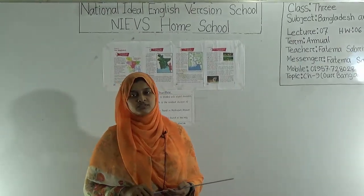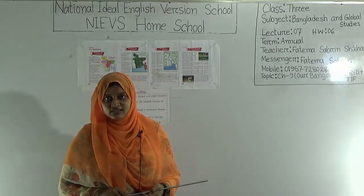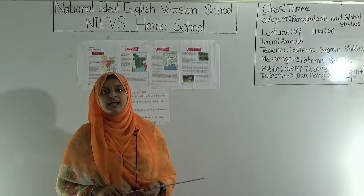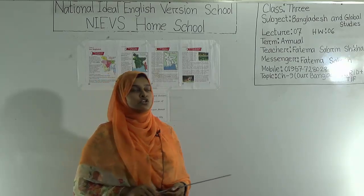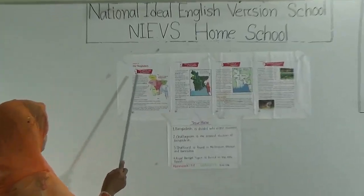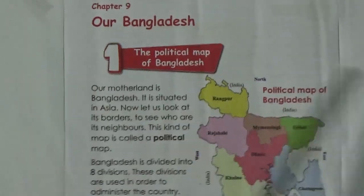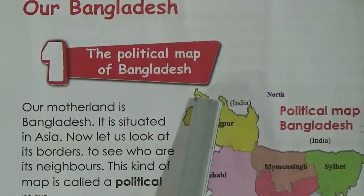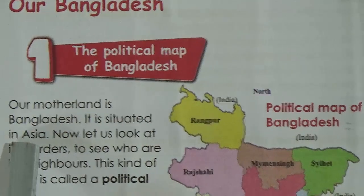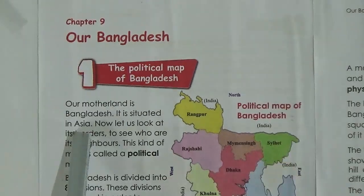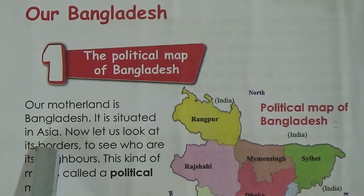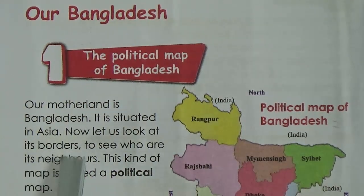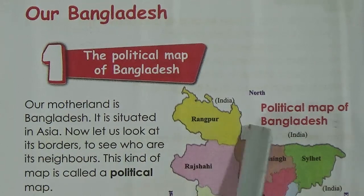We will discuss about the text from Chapter 9 and then we will do true and false. In Chapter 9: Our Bangladesh, we will find four lessons. Our first lesson is the political map of Bangladesh. Our motherland is Bangladesh — it is situated in Asia. Now let us look at its borders to see who are its neighbors.